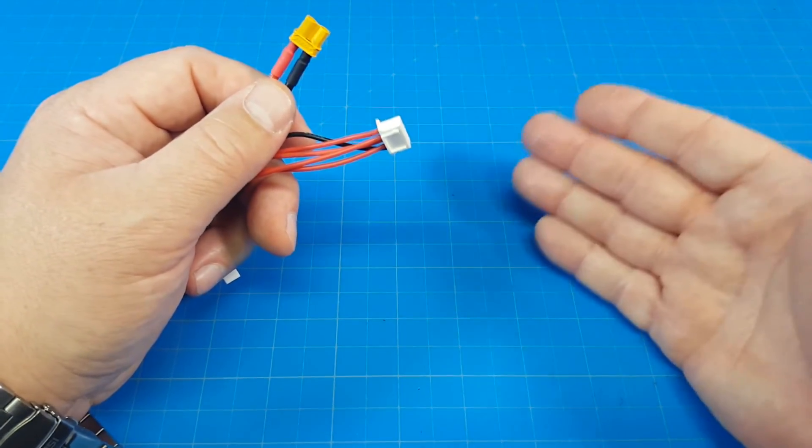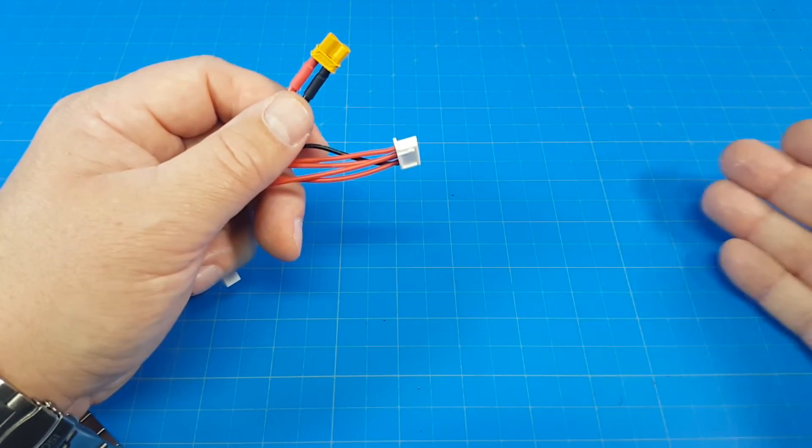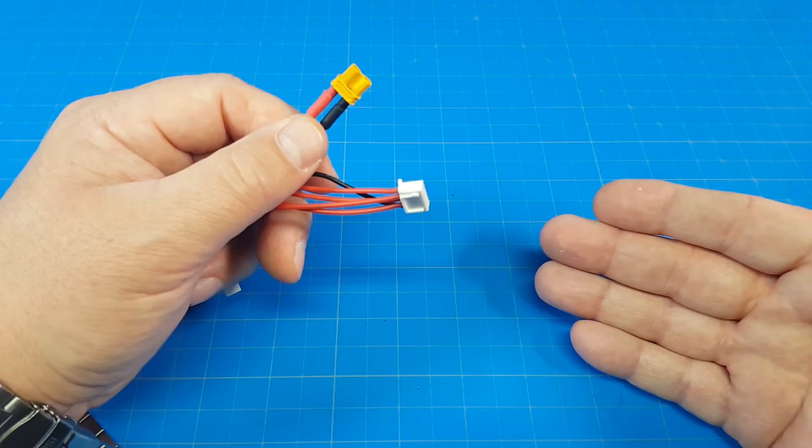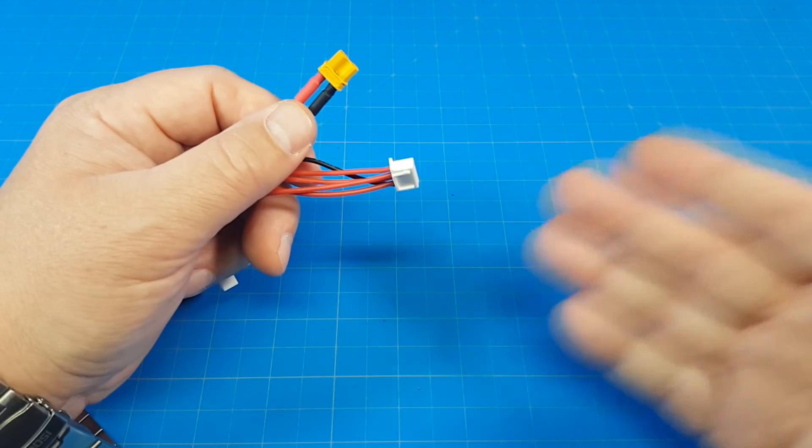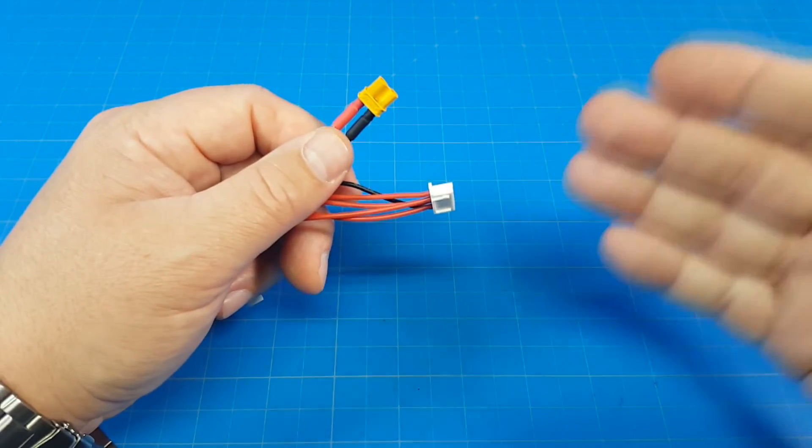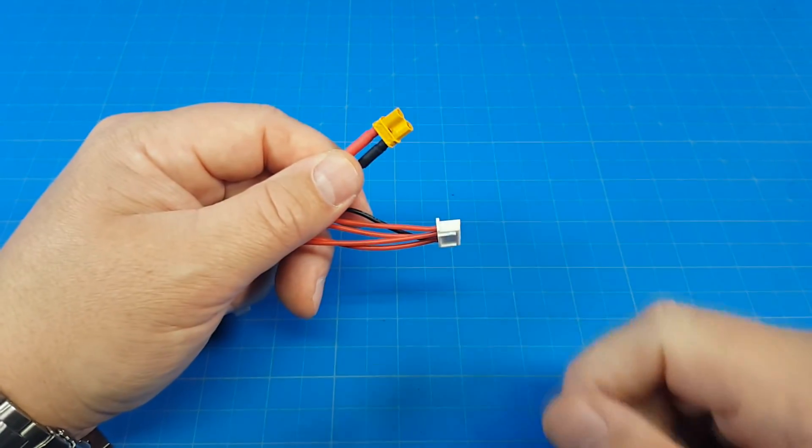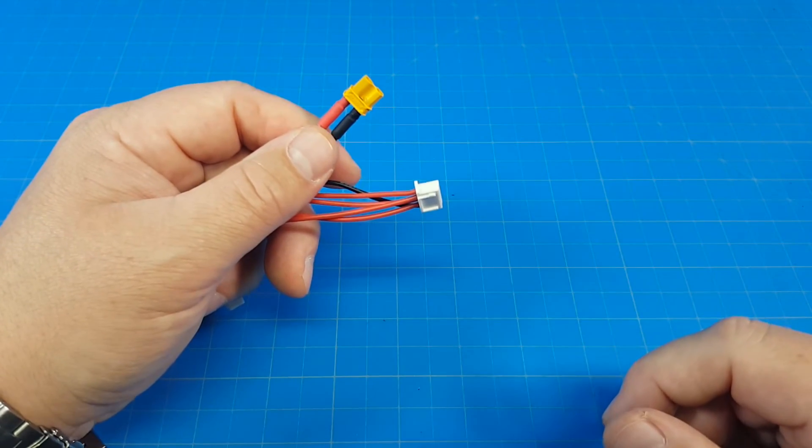Of course, a female connector would work if you've got the male side on your battery charger, but that's pretty unlikely because your male batteries, your batteries are male-ended, so you'll need a female end on your battery charger. So don't follow the pictures as far as that XT30 part. Go ahead and put on the male end.